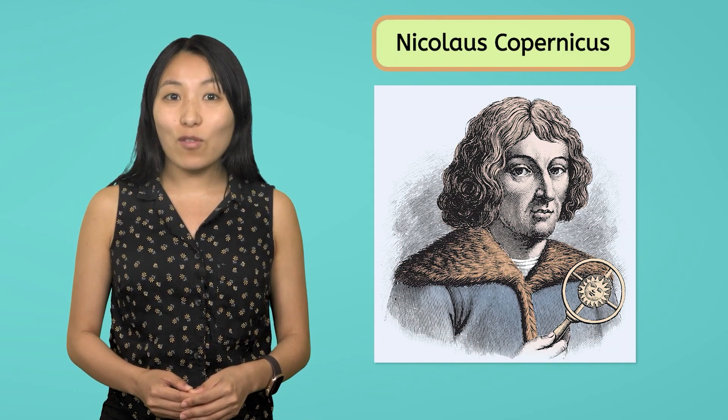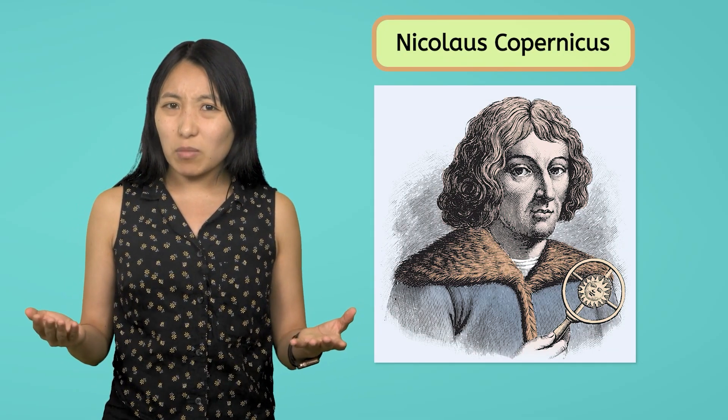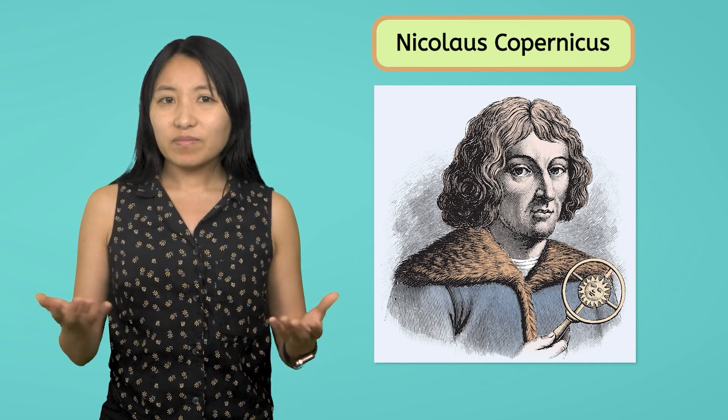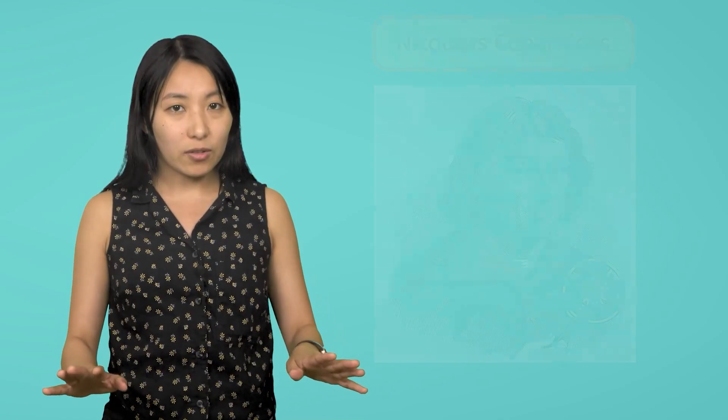Nicholas Copernicus was a Renaissance mathematician and astronomer who thought the geocentric model just didn't add up. In the early 16th century, he proposed a completely different model.